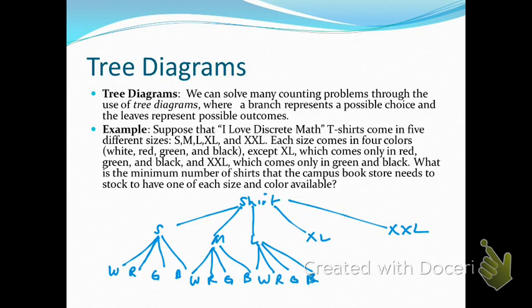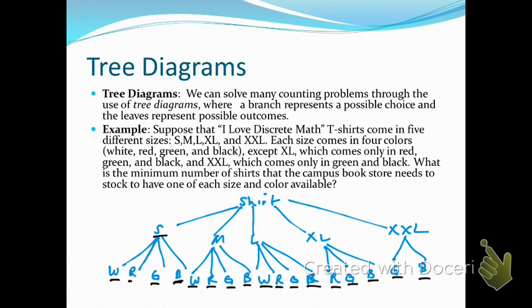XL only comes in red, green, and black — so three branches. Double XL only comes in green and black. These are all the possibilities. Each leaf represents one combination; for instance, one leaf would be a black small shirt. Counting all the leaves: small has 4, medium 4, large 4, XL 3, double XL 2 — totaling 17. The minimum number of shirts that must be ordered is 17. This is the process we call tree diagrams.